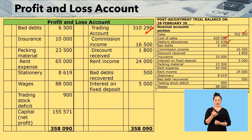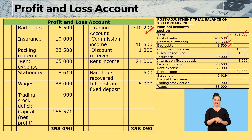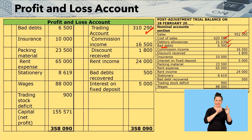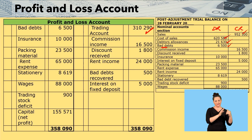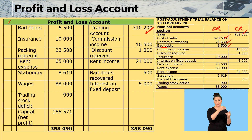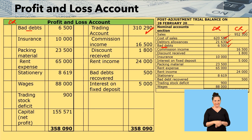The first amount in our post-adjustment trial balance is bad debts. Bad debts is an expense, hence you see it on the debit side of your nominal account section. I'll bring it now to the debit side of the profit and loss account — bad debts $6,500.